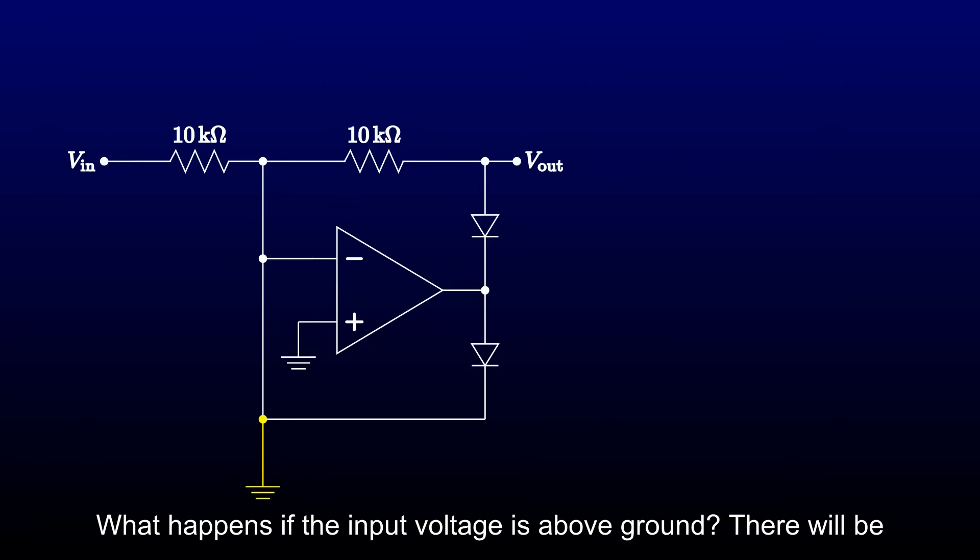It might not be obvious at first what's going on, so let's take it step by step. To start with, remember that the inverting input of the op-amp will be a virtual ground as long as the feedback loop is working. What happens if the input voltage is above ground? There will be a current flowing through the input resistor toward the virtual ground. There needs to be an equal and opposite current flowing out of the virtual ground. We assume op-amp inputs draw no current, and the bottom diode won't pass current in that direction. So all the current has to be flowing through the top diode and the feedback resistor. For the currents to balance, the output voltage has to be the negative of the input voltage, since the input and feedback resistor are equal. The op-amp's output needs to be one diode drop below that.